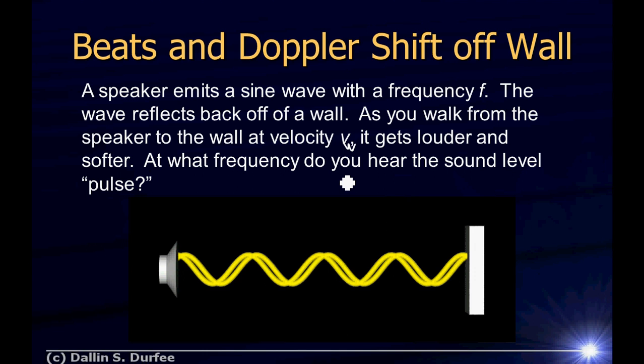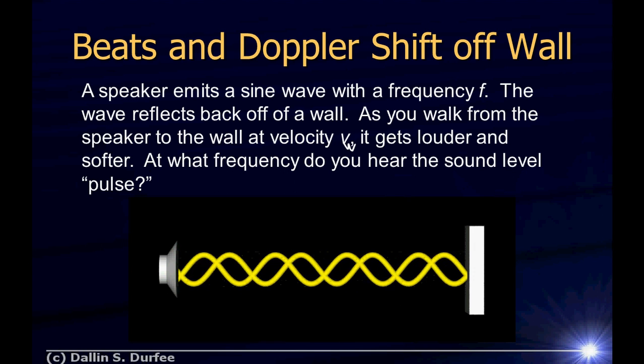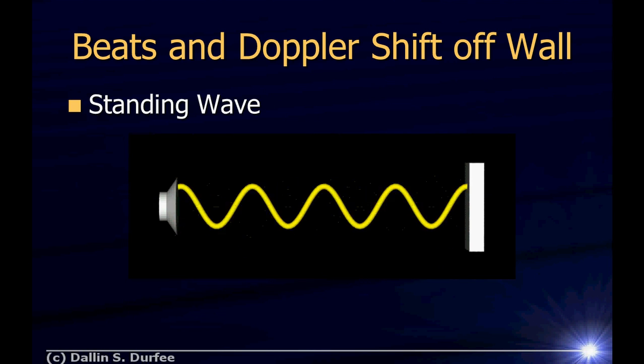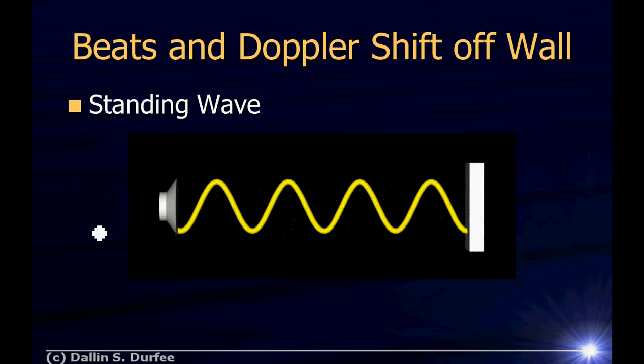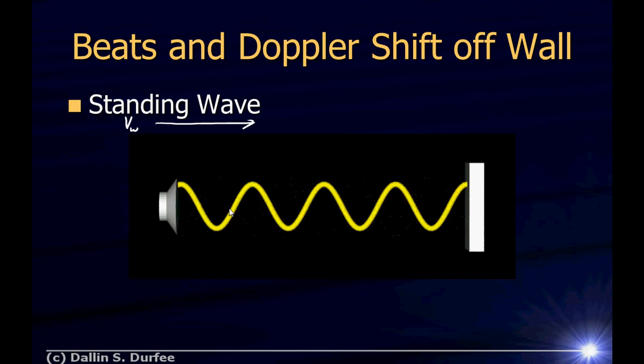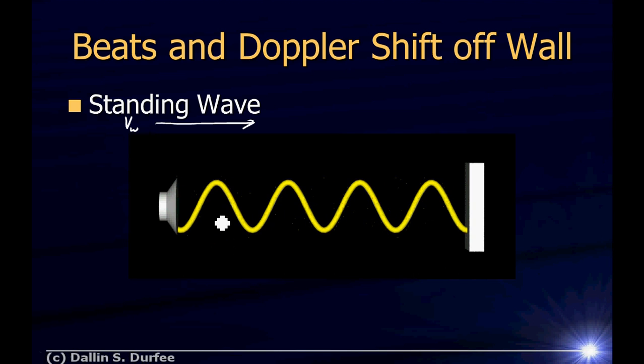Well, there's two ways to work this problem. The first way is to say, look, I've got two waves traveling in opposite directions here. So what am I going to get? I'm going to get a standing wave. And my standing wave, as I walk past my standing wave at velocity v_walk, the sound will get louder and softer, because if I'm standing at an anti-node, I hear a lot of sound. But if I'm standing at a node, I don't hear a lot of sound. So to figure out how long it takes between pulses of loud sound, I just have to figure out how long it takes me to walk from one anti-node to the next.